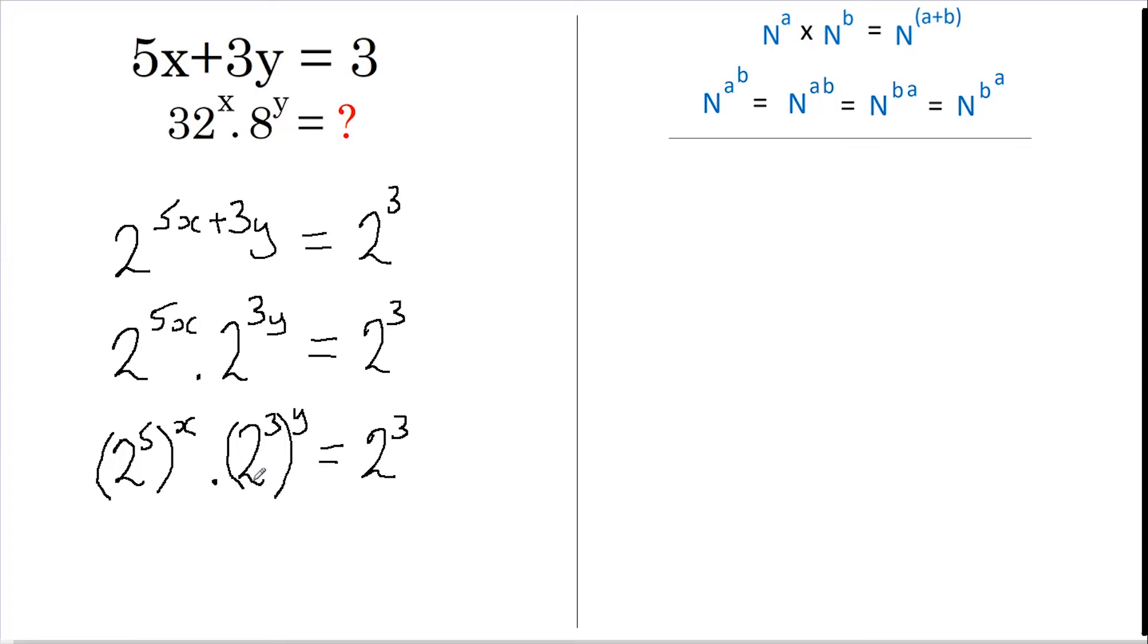If we now evaluate these brackets, we get 2 to the power of 5, which is 32 to the power of x, multiplied by 2 to the power of 3, which is 8 to the power of y, and that equals 2 to the power of 3, which is 8.